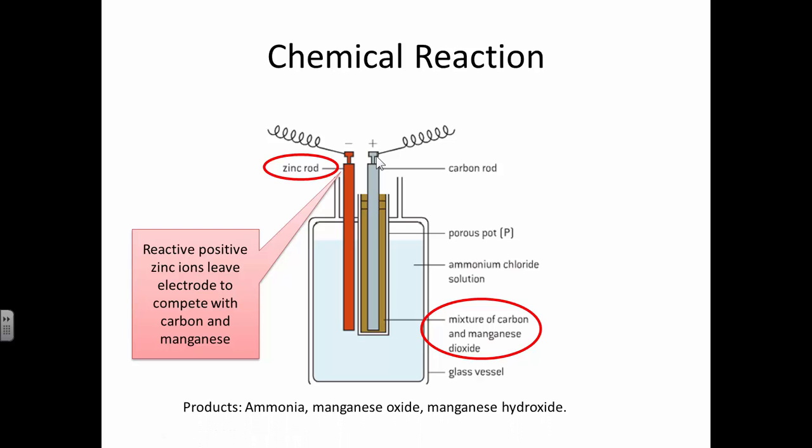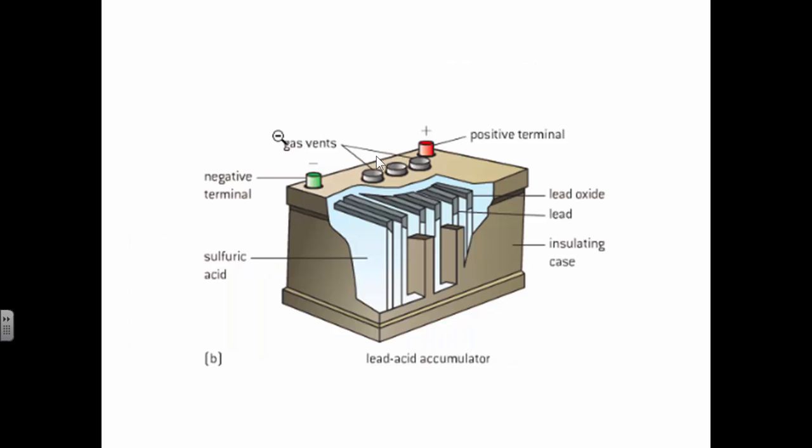The products however will be ammonia, manganese oxide and manganese hydroxide, which are all a little bit nasty. Here's another cell. We have a metal there and we have sulfuric acid. And this is the basis of the chemical reaction that takes place here. And here again we will get a positive and negative terminal.